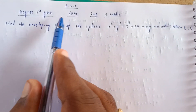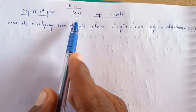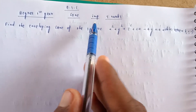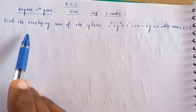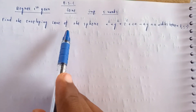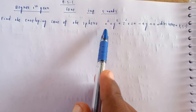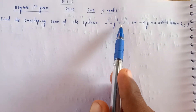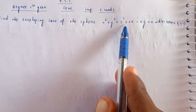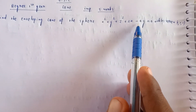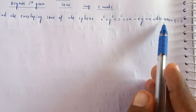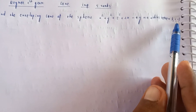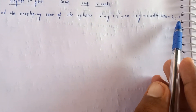Welcome to my channel. BSC Cone Sloman. Imported Samhiti. Find the Enveloping Cone of the sphere x² + y² + z² + 2x - 4y = 0 with its vertex at (1, 1, 1).